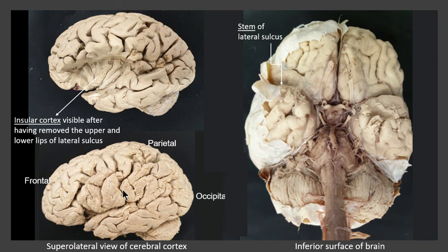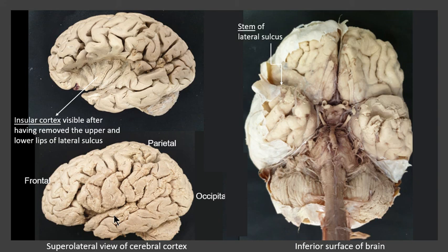One more thing we can identify here is a region known as the insula or the insular cortex. The insular cortex is basically an area comprising gray matter with different gyri, and it is hiding in between the lips of the lateral sulcus. The superior lip of the lateral sulcus is formed by the parietal lobe, and the inferior lip of the lateral sulcus is formed by the temporal lobe. If we remove or separate these two lips — the parietal and the temporal lobe — we can see this deeper region known as the insula.